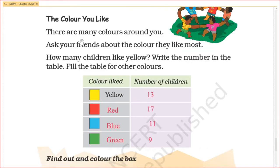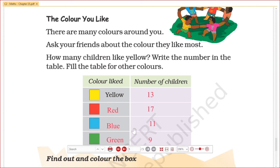The color you like. There are many colors around you. Ask your friends about the color they like most. How many children like yellow? Write the number in the table and fill in the table for other colors. How many children like yellow? 13 children like yellow. How many children like red? 17. You have to put in the number of children for other colors.